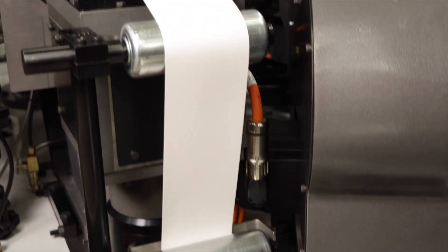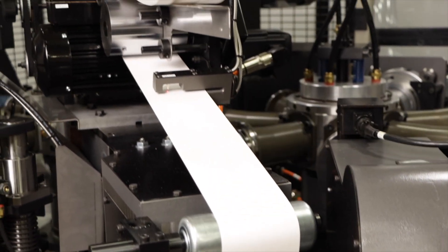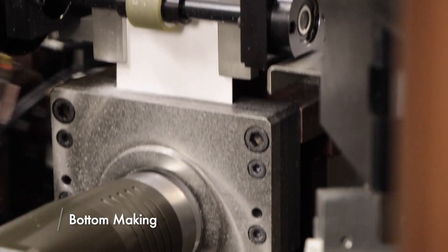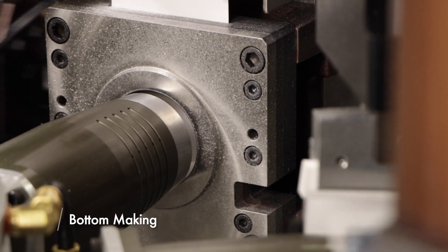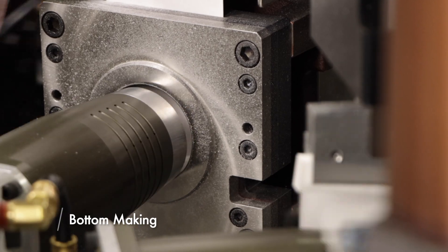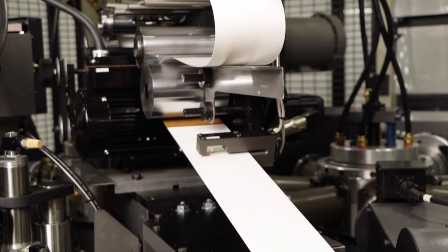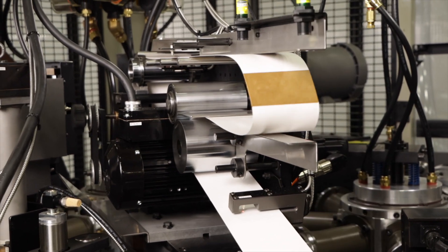As the sidewall blank is processed, bottom stock is fed into the servo-fed bottom maker station. At this station, the bottom blank is punched from the web and placed on the end of the mandrel. Auto splice detection ensures continuous production and prevents damage to the tooling.